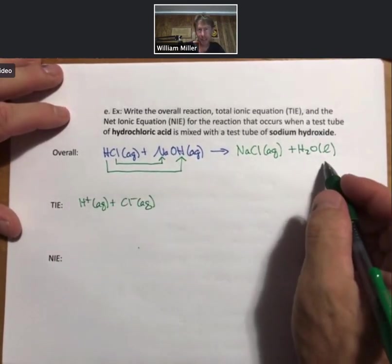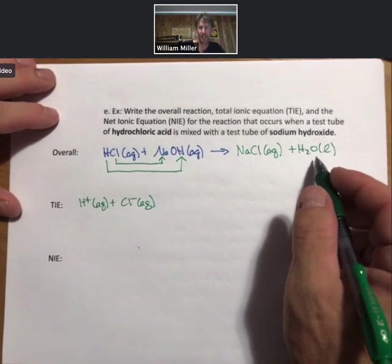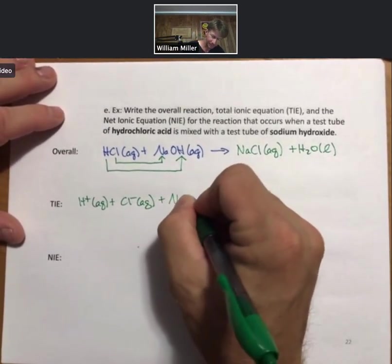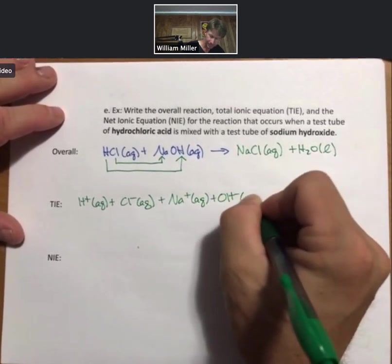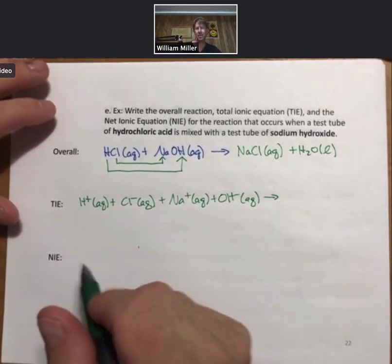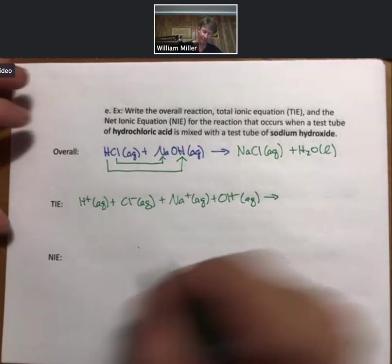That is balanced, by the way. That's the stuff I always forget, or more often than I would like to admit. But it is balanced. I'm imagining that all four of these reactant species in their respective beakers or test tubes are floating around with their hydration shells around them.